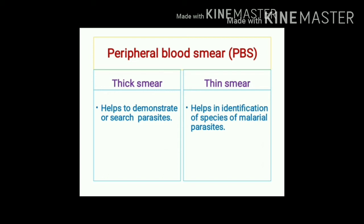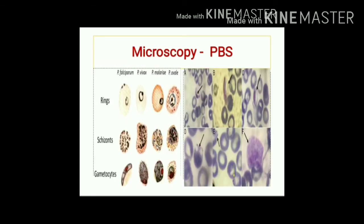On thin smear, various stages of malarial parasite can also be identified, including ring forms, schizonts, and gametocytes. These forms can be seen for Plasmodium falciparum, Plasmodium vivax, Plasmodium malariae, and Plasmodium ovale.